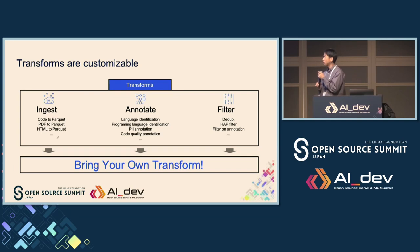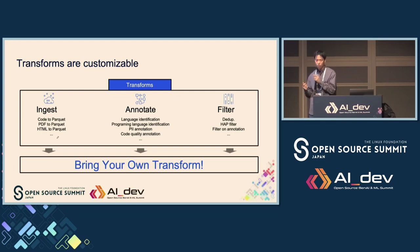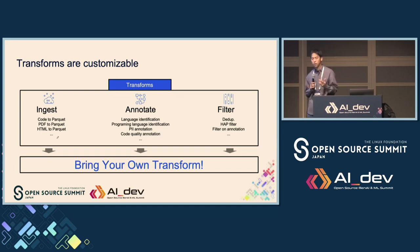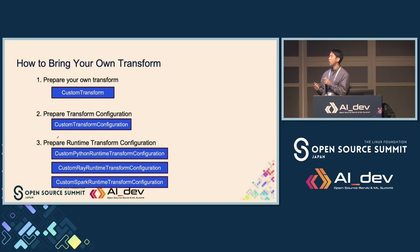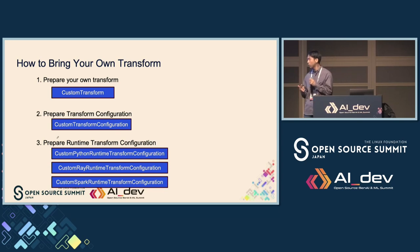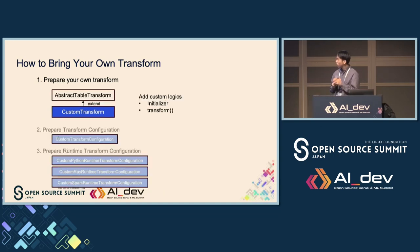The file processor creates a data access instance using the data access factory. Then the file processor creates transform instances using the transform configuration. The concrete transform instance processes data using the data access instance and transform shared components. As I mentioned, there are three important roles for transforms, and we've prepared pre-built transforms for each role. However, you may want to create your own custom transforms — and don't worry, transforms are customizable. You can bring your own transforms into Data Prep Kit. Let me show you how, step by step. There are only three steps.